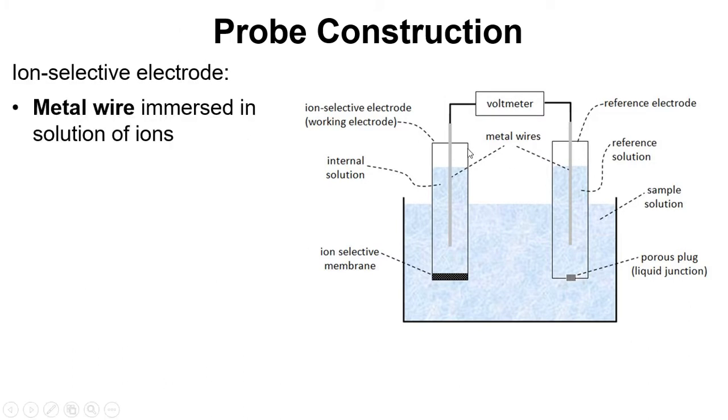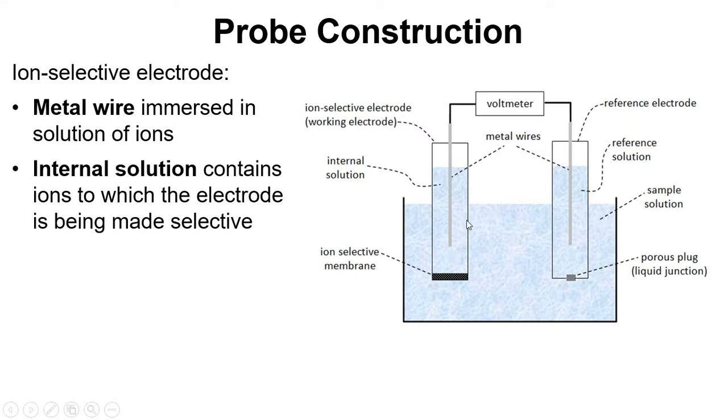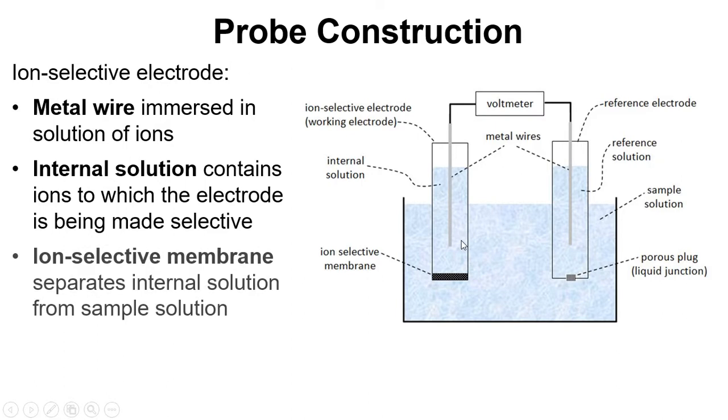For the ion-selective electrode, this metal wire is submerged into this solution of ions, referred to as the internal solution. And this has ions to which the probe is being made selective. So if this was a potassium-selective electrode, this would contain potassium ions, and so on and so forth.